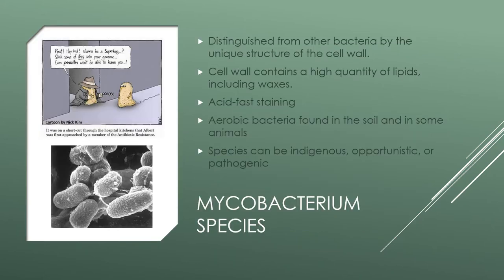The unique structure of the mycobacterium cell wall separates it from other prokaryotes. It contains a high quantity of lipids, including waxes, which is why they are classified as gram variable — they don't consistently stain red or blue — and an acid-fast stain must be used to identify them correctly. These organisms are straight or slightly curved, typically non-motile, and do not form spores. The genus includes saprophytes, obligate parasites, and other types varying in nutritional requirements. They are aerobic and found in soil and in warm-blooded and cold-blooded animals such as humans, turtles, fish, snakes, and frogs.